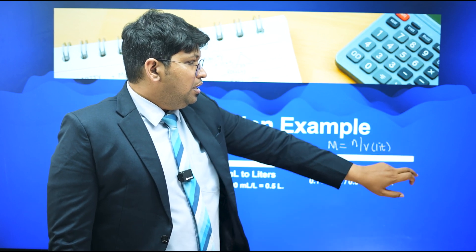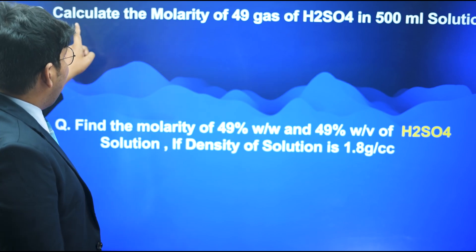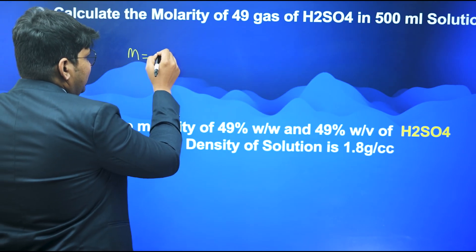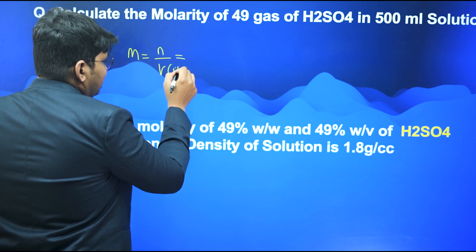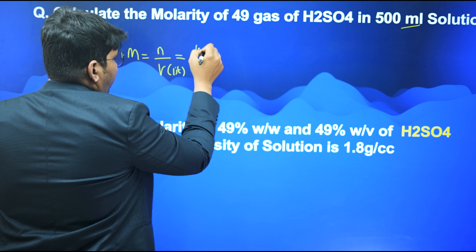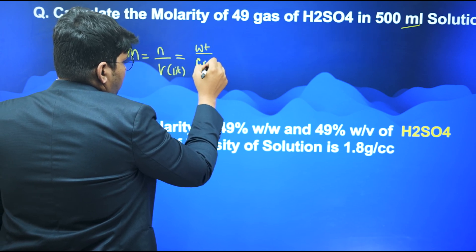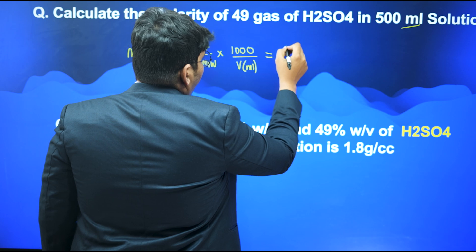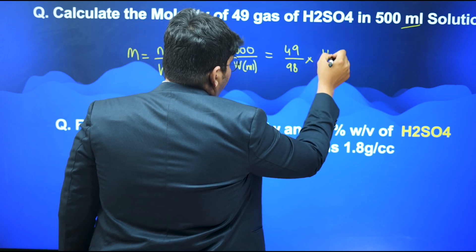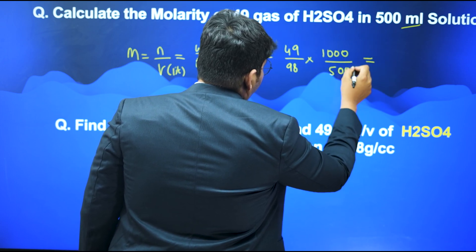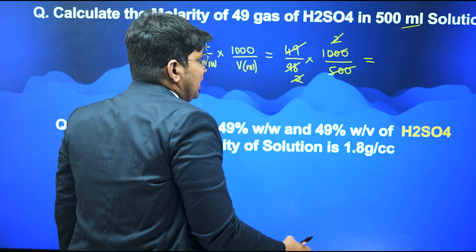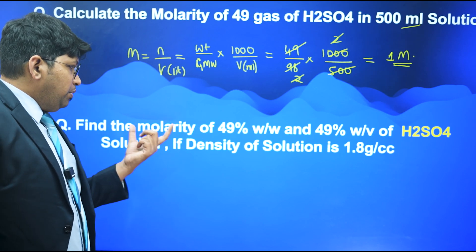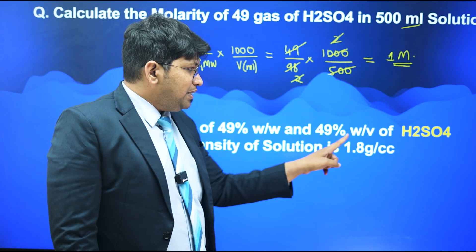Next question: calculate the molarity of 49 grams of H2SO4 in 500 mL solution. Using M = (weight / molar mass) × (1000 / V in mL): M = (49 / 98) × (1000 / 500). Simplifying: 49/98 = 0.5 and 1000/500 = 2, so these cancel to give 1M solution.